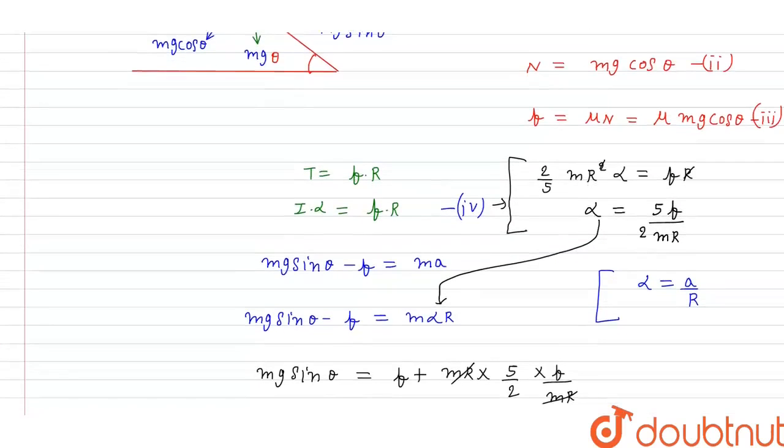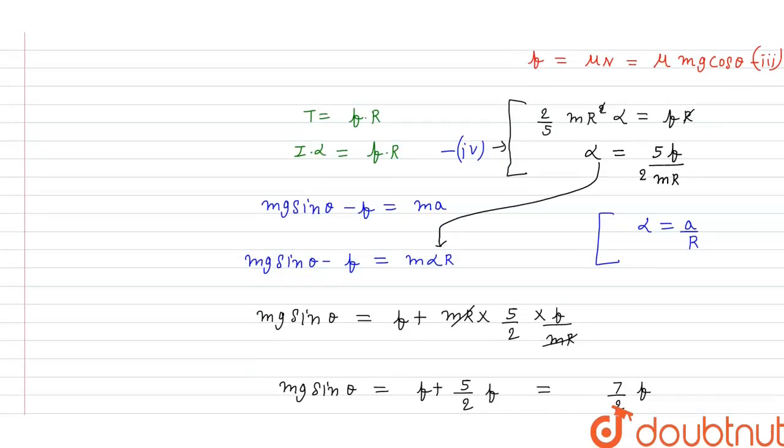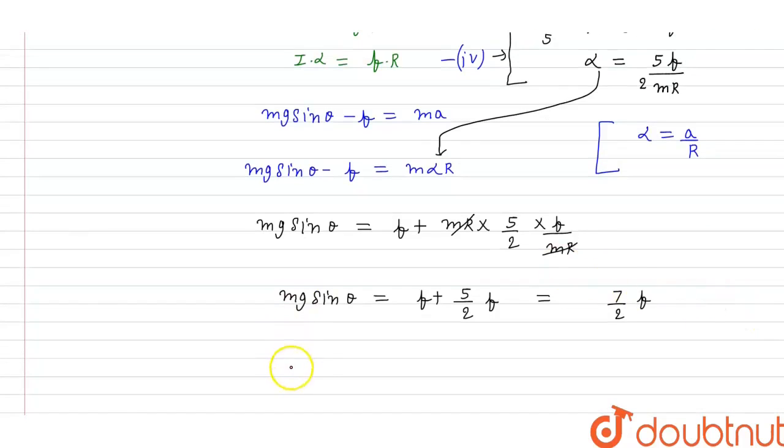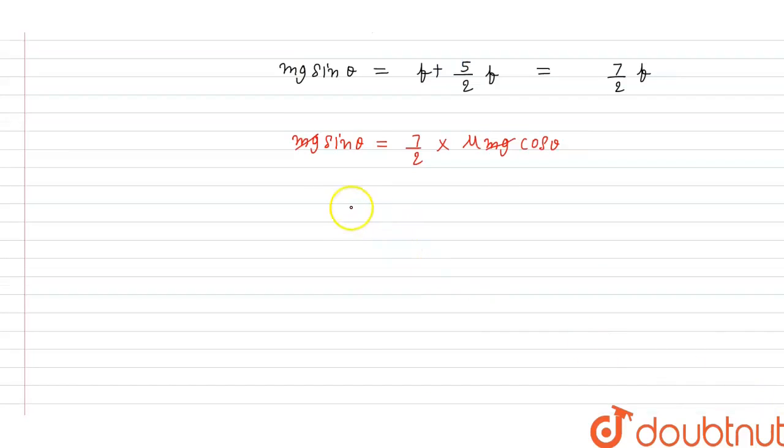From equation 3, F is equal to mu Mg cos theta. Mg sin theta is equal to 7 by 2 into mu Mg cos theta. Mg Mg got cancel out. So mu equal to 2 by 7 sin theta by cos theta is tan theta.